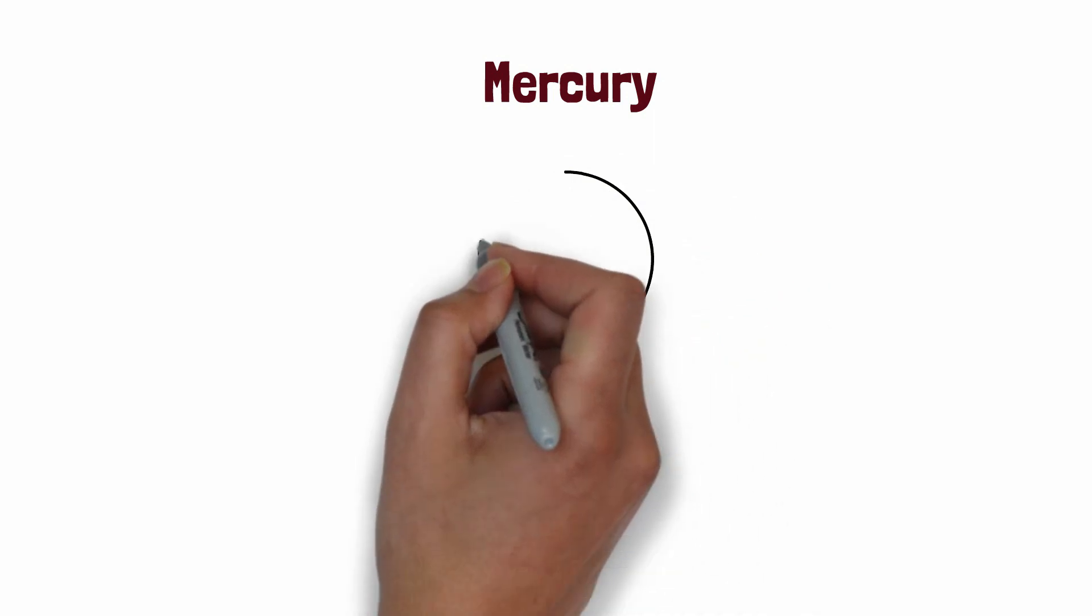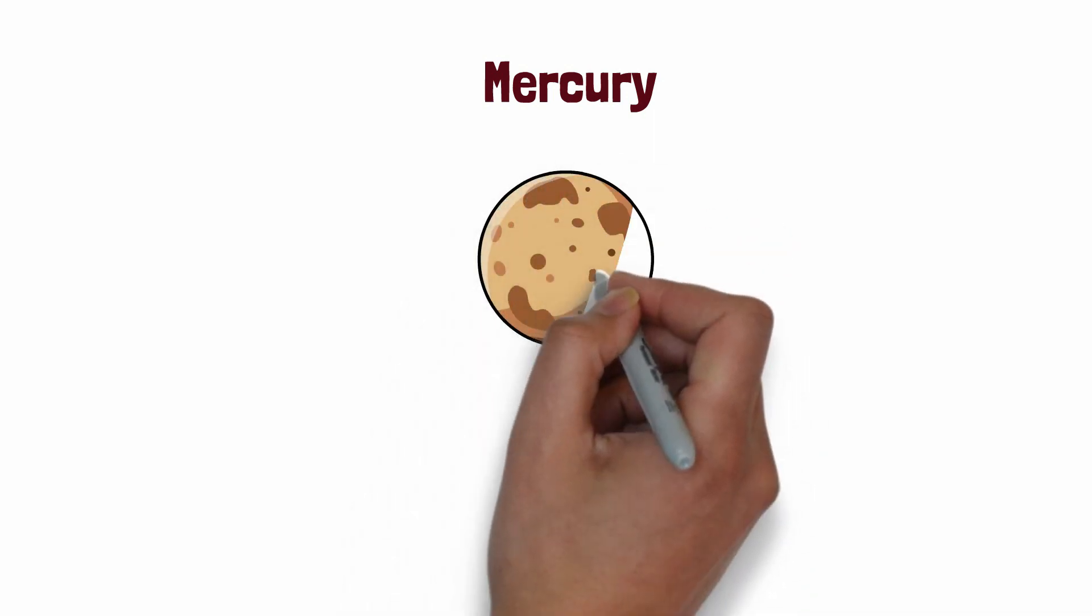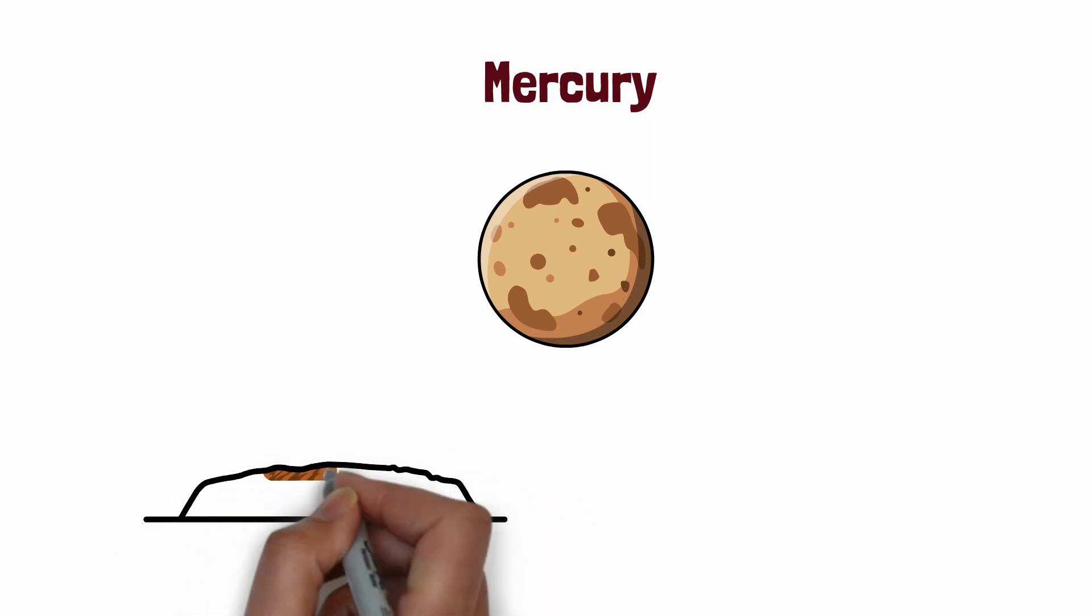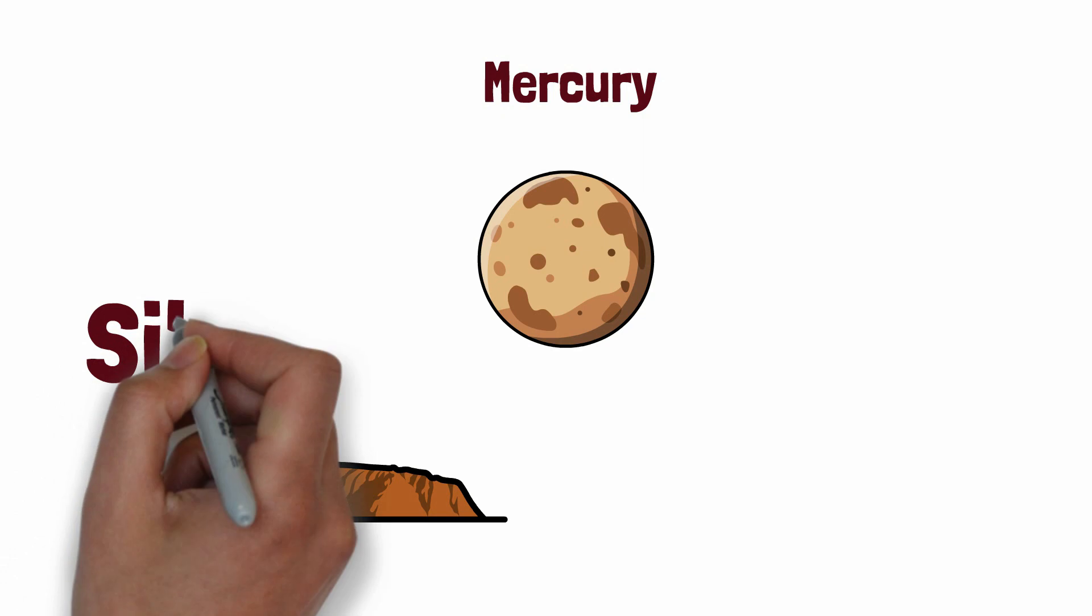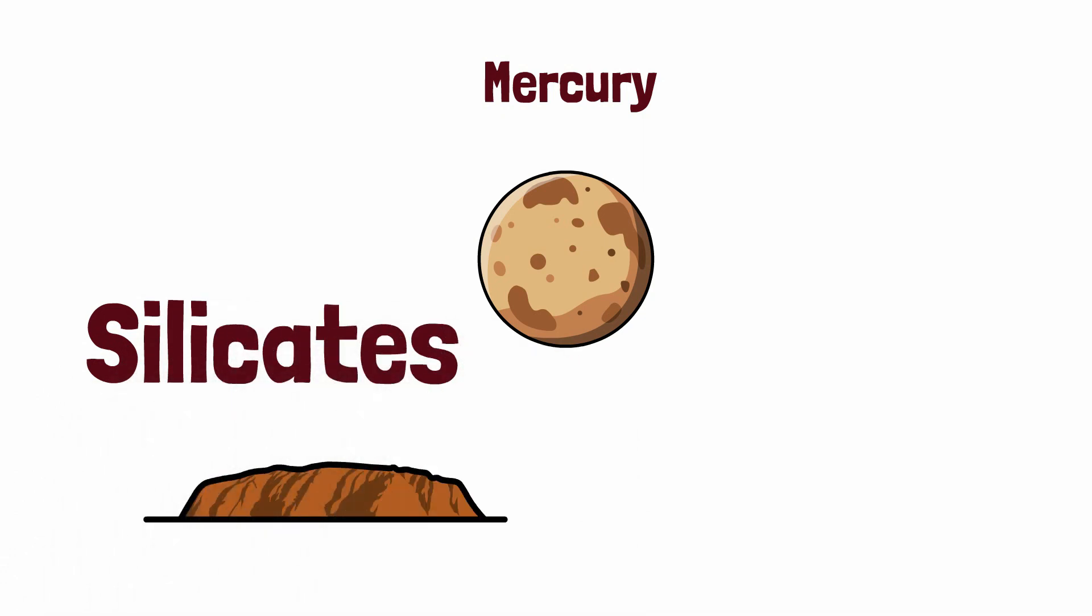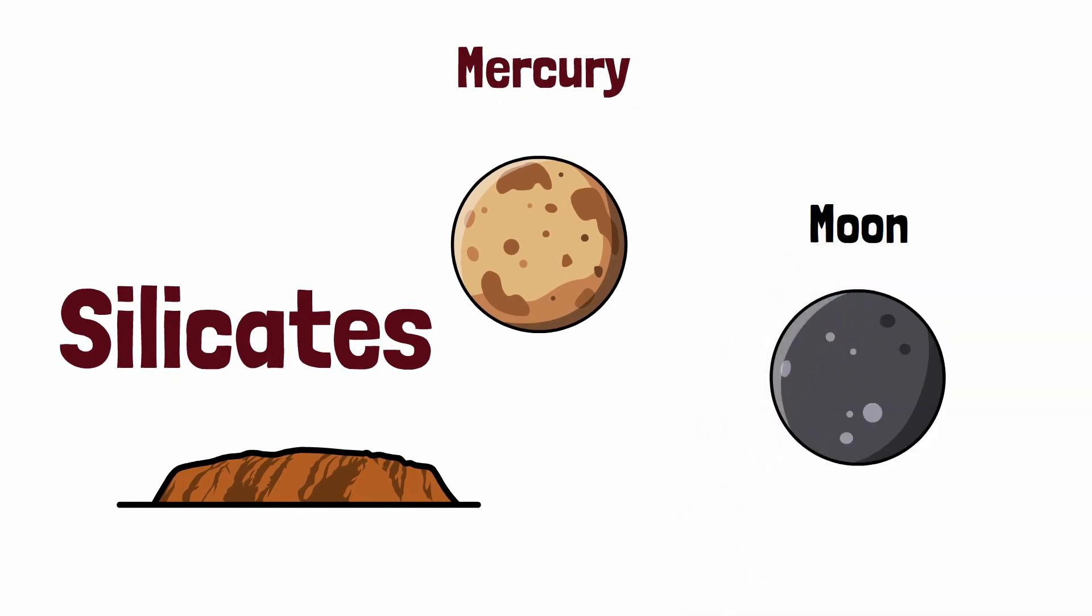Mercury's surface is believed to contain a lot of dust and is rocky in nature. The dust is so much in quantity that the surface is actually covered with a layer of dust. As you all know, dust is composed of a lot of silicates, leading the surface to appear brownish-gray in color. One interesting thing about Mercury's surface is that it is very similar to that of the moon.